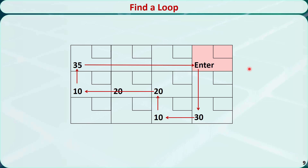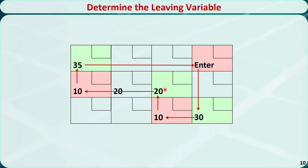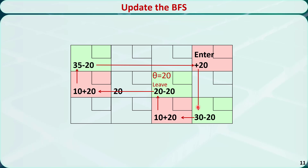In step 3, we count the cells in the loop and label them as odd or even. Starting from the entering variable: 0, 1, 2, 3, 4, 5, 0. The odd cells are marked in green and the even cells are marked in red. In step 4, the smallest value among all odd cells is 20 — assign this to theta, and that cell is the leaving variable. In step 5, decrease each odd cell by theta and increase each even cell by theta. The leaving variable changes to 0 and the entering variable changes to positive 20. This is the new basic feasible solution.